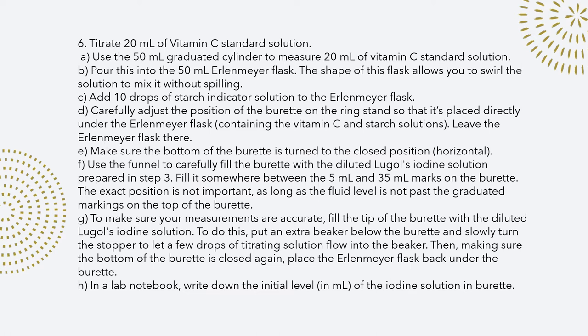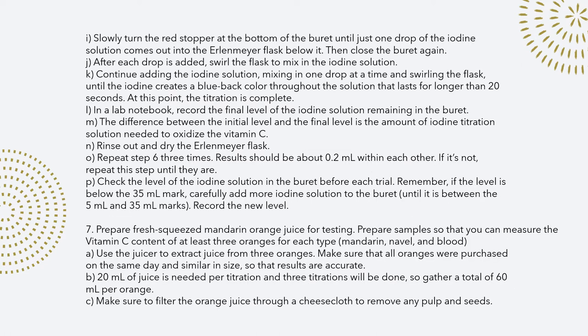After I had my stand all set up, I began my first trial. I measured 20 milliliters of the vitamin C standard solution and put it into the flask. Once it was in the flask, I added 10 drops of the starch indicator solution. I then put the iodine in the burette — I typically put about 19 to 21 milliliters, which was enough to titrate it. You want to let a couple drops out first so you can measure it correctly. After writing down my initial milliliters, I began to let the drops fall, swirling after each drop to see if the color was going to change. The color changed to a blue-black color and I had to make sure that color lasted longer than 20 seconds.